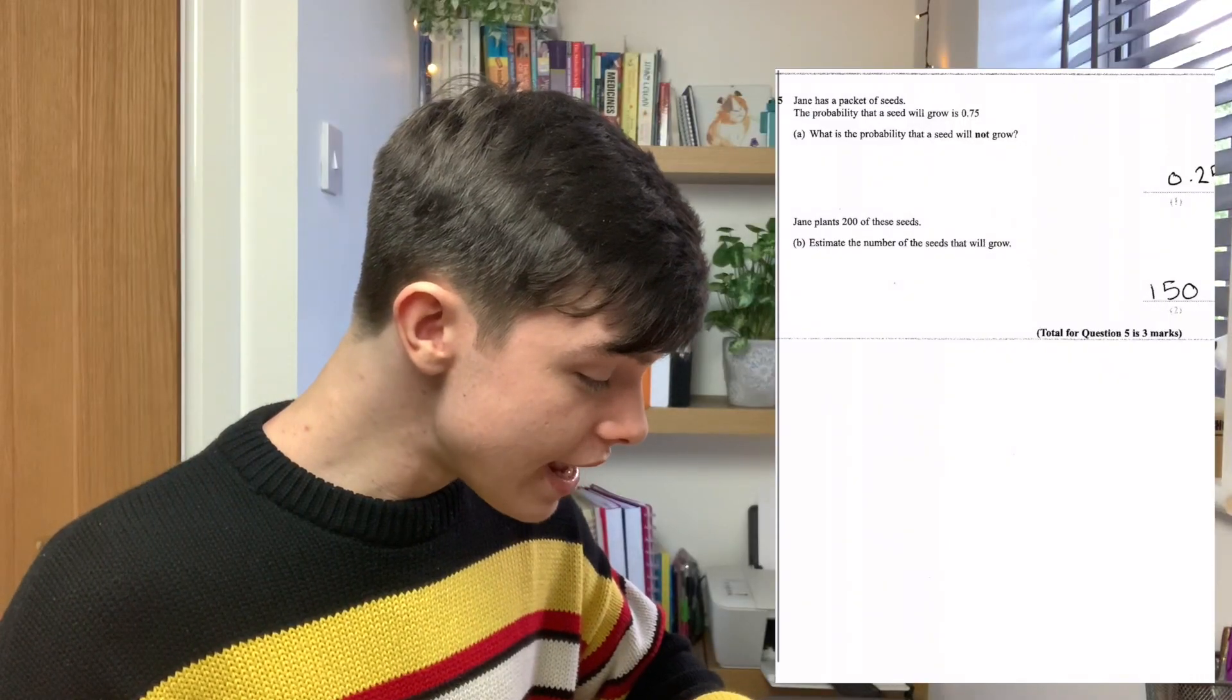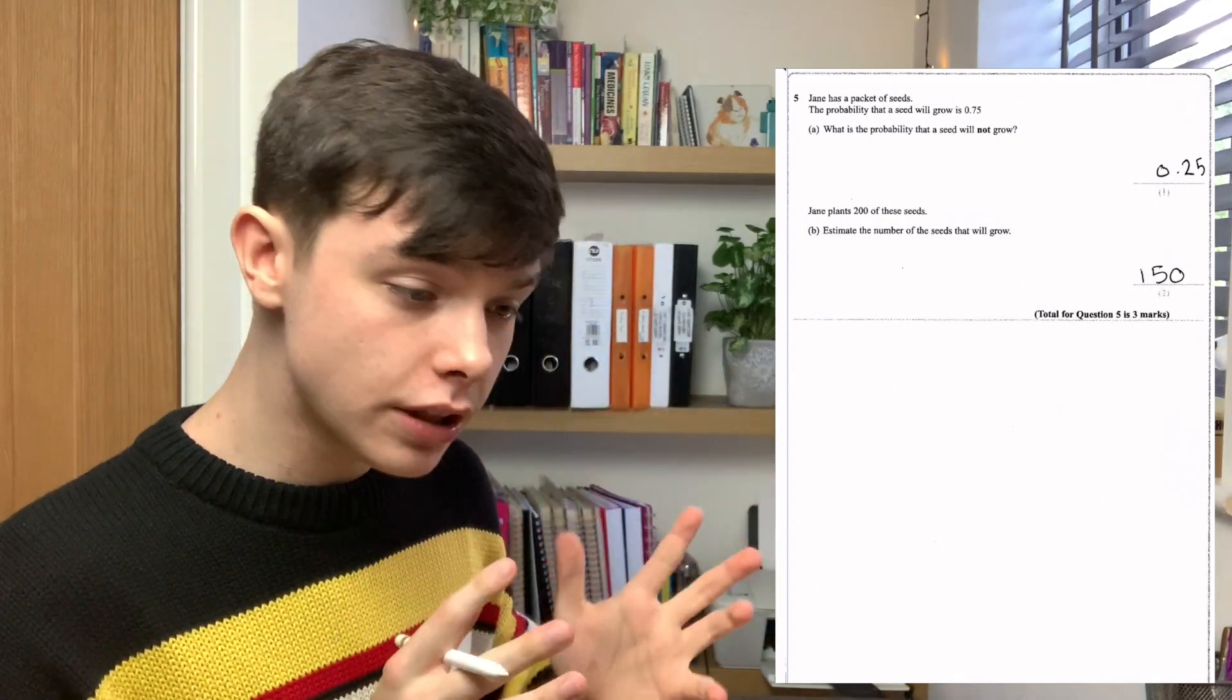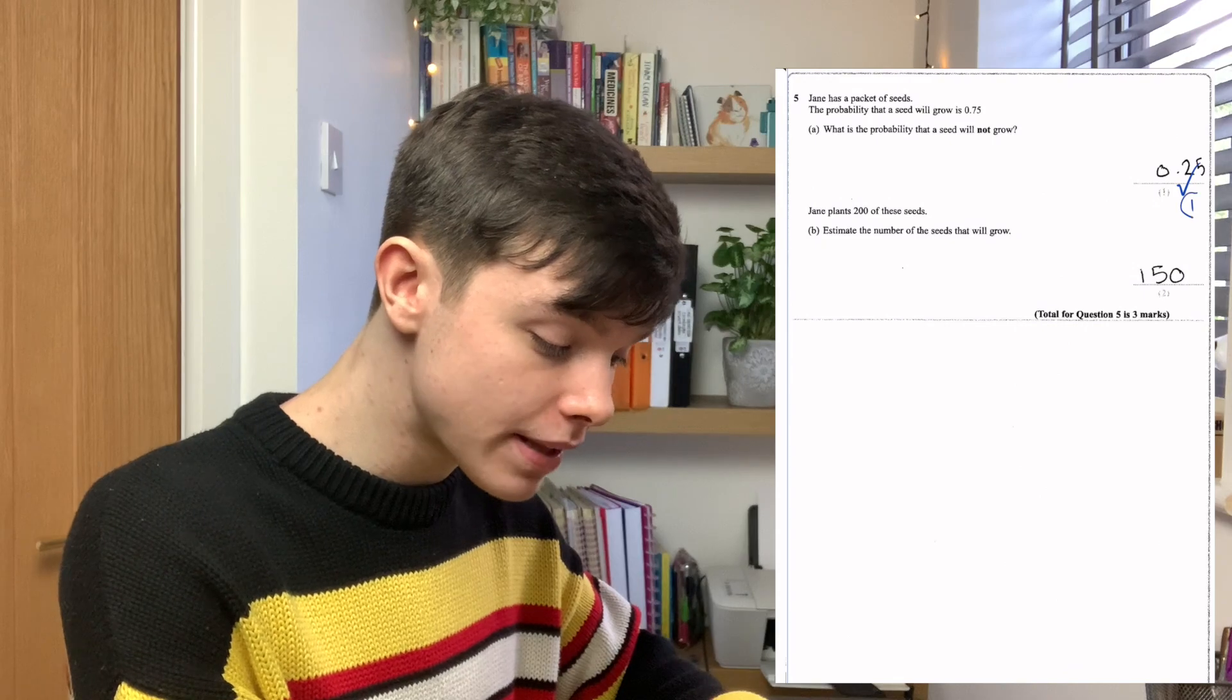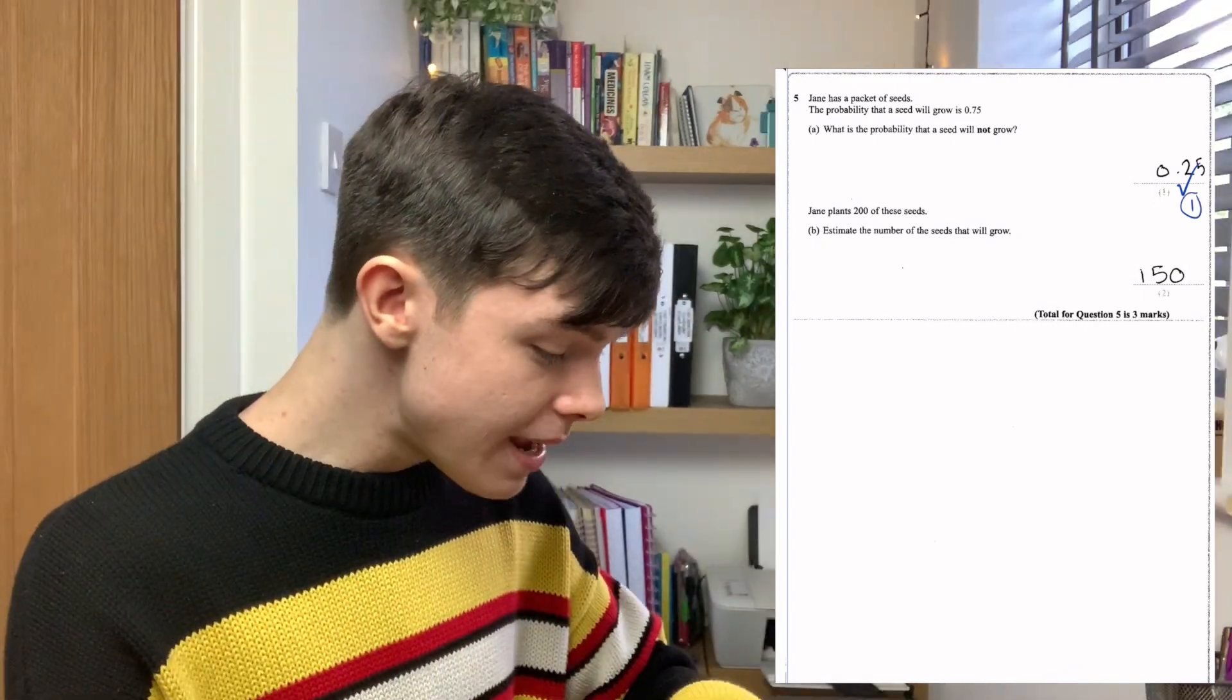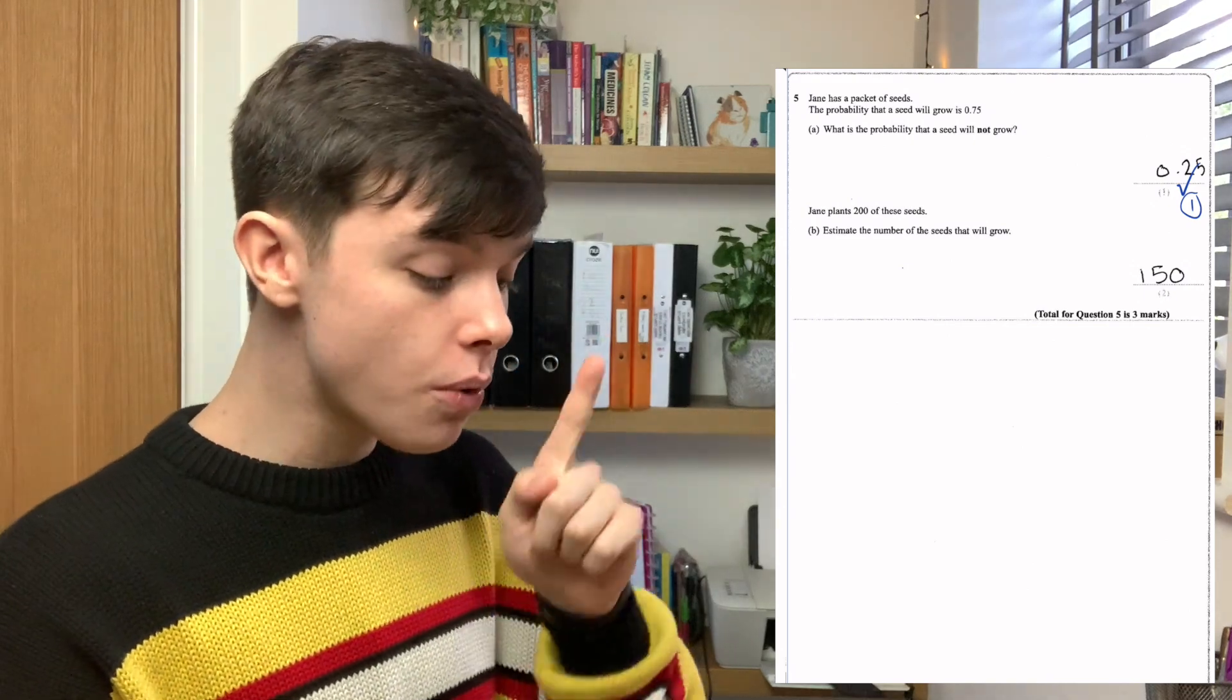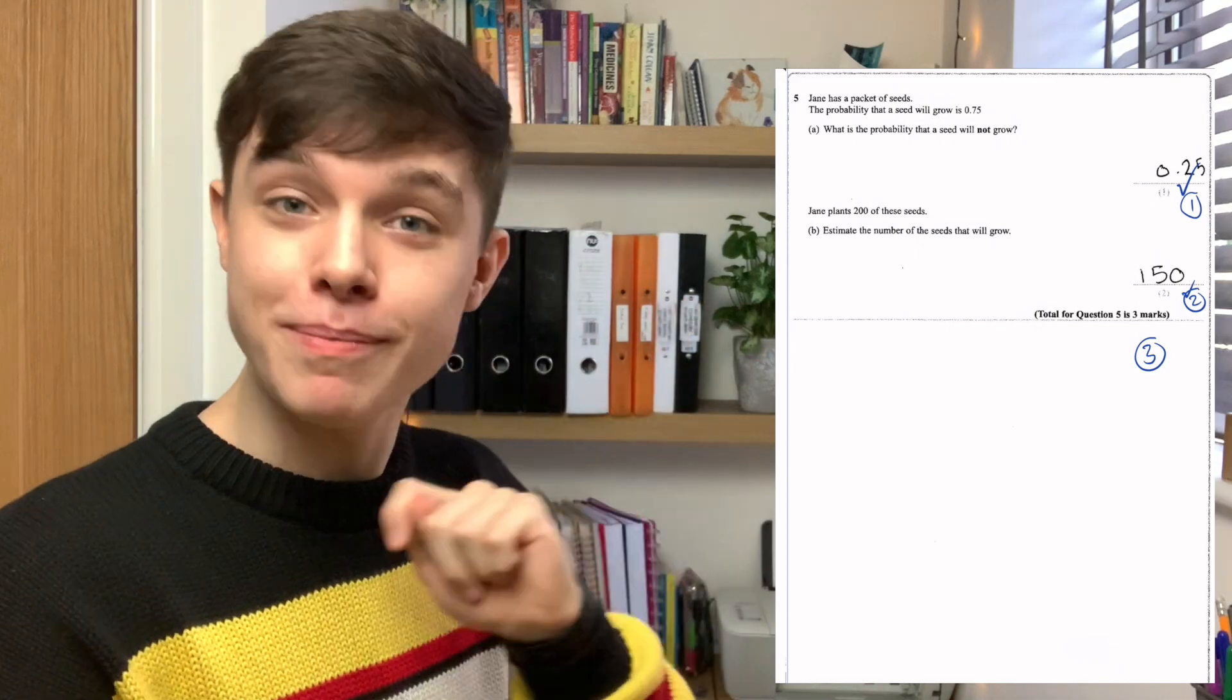The next question is the probability question. If the probability that the seed will grow is 0.75, correct. 0.25 is the probability that it won't grow. Jane plants 200 of these seeds. Estimate the number of seeds that will grow. You are correct with 150. So, that is three marks.